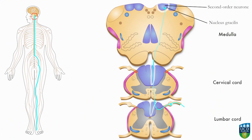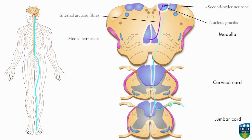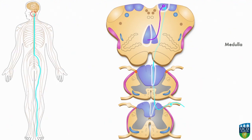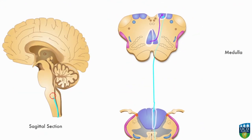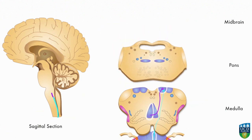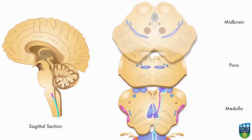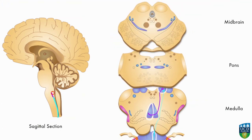On reaching the medulla, the first order neuron synapses with a second order neuron in the nucleus gracilis. The second order neuron crosses over to enter the contralateral medial lemniscus, then continues to carry the impulse upwards to the midbrain via the medial lemniscus.